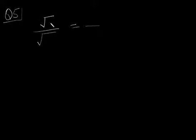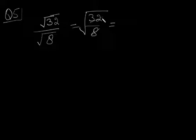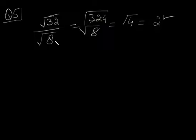For example, take √32 and √8, both irrational numbers. When you divide them, they combine under a single root as √(32/8), which is √4. The square root of 4 is 2, which is a rational number.